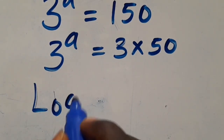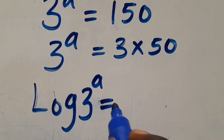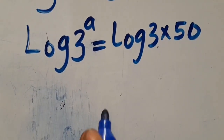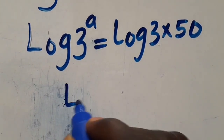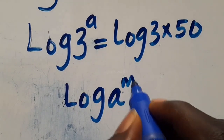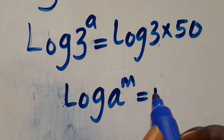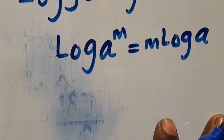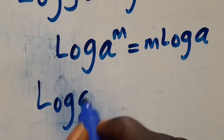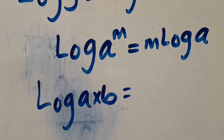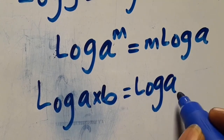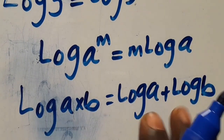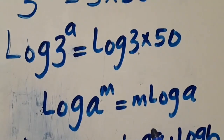What we can do here is to introduce log. So when we introduce log to both sides, log of 3 to the power of a equals log of 3 times 50. Let us recall from the law of logarithm that when you have log a to the power of m, this power will come down as m log a. And likewise, when you have log a multiplied by b, this gives us log a plus log b.